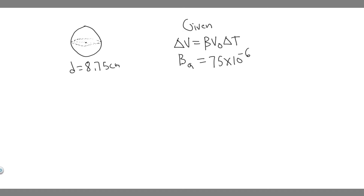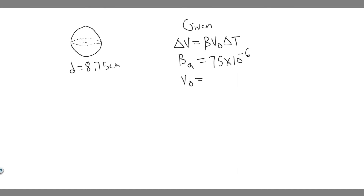The way we're going to solve it is we've just got to find all these values. So let's start with finding V₀, the initial volume. To find the initial volume, what they give us is the diameter, and what we can do is just use the volume of a sphere formula in order to calculate it. The volume of a sphere is (4/3)πr³.